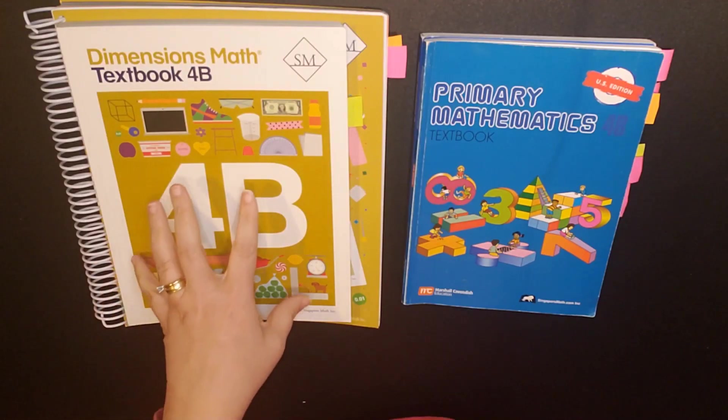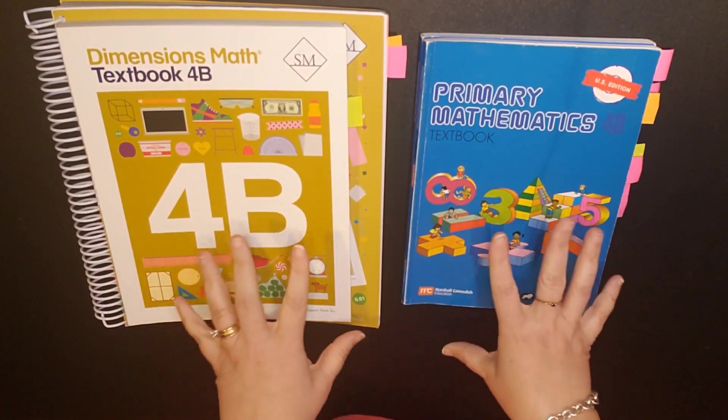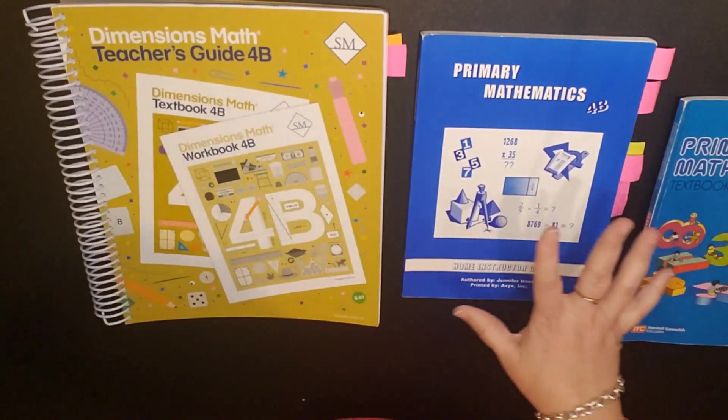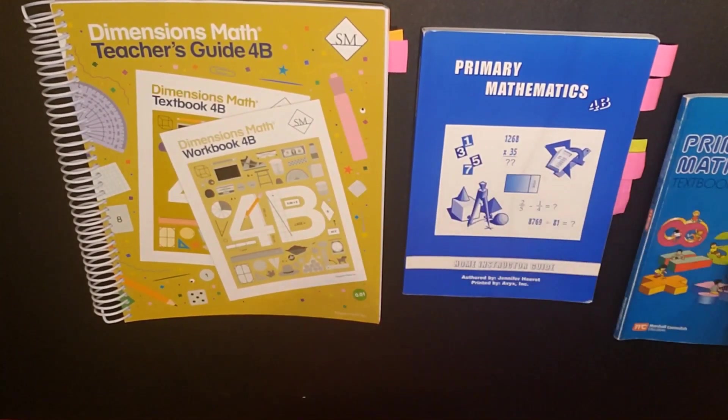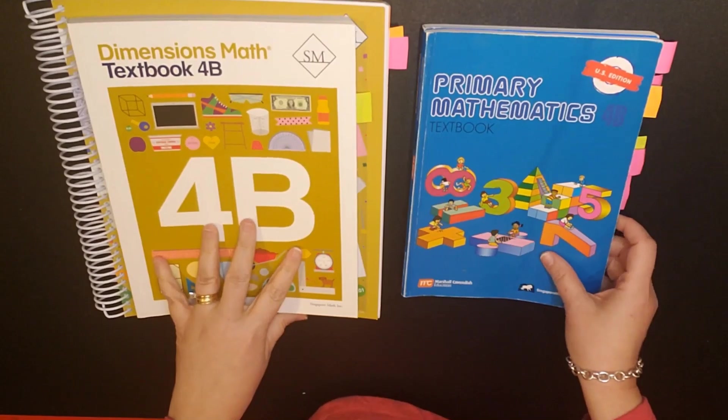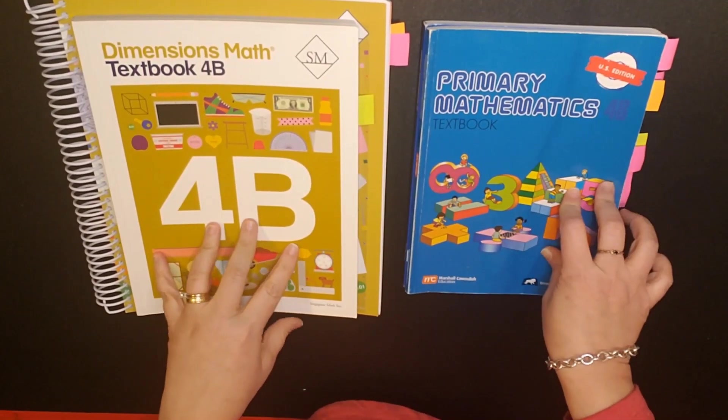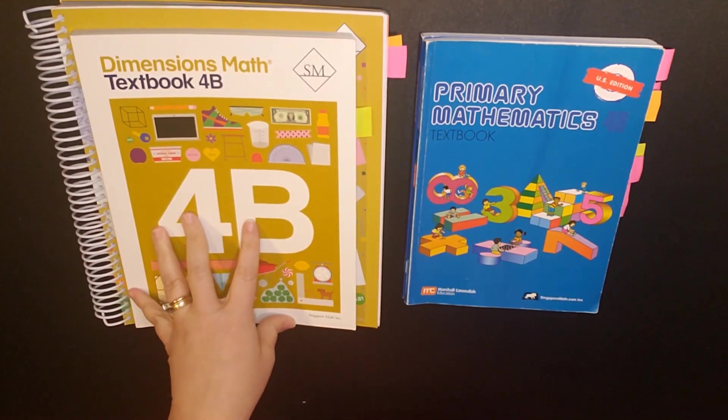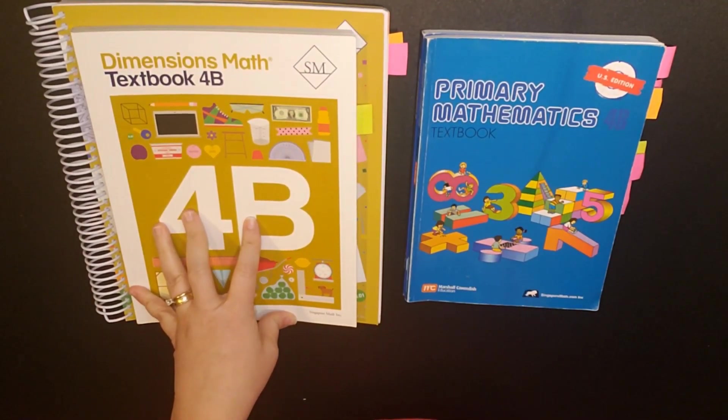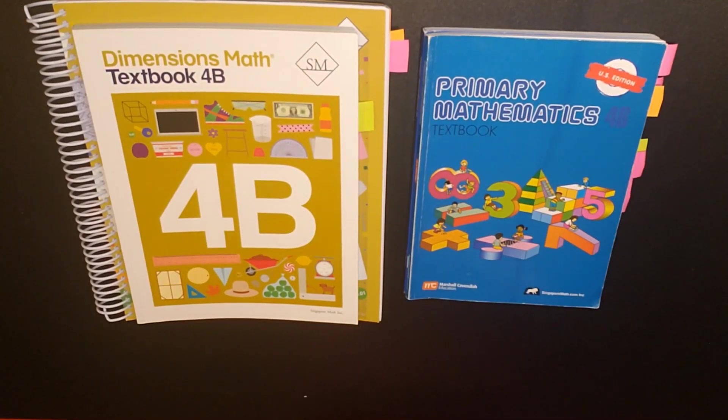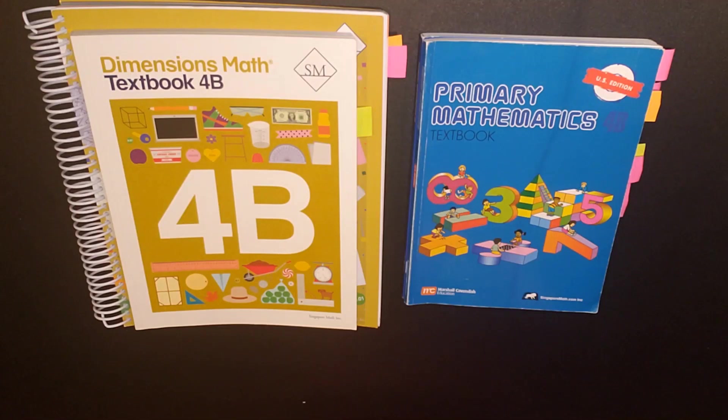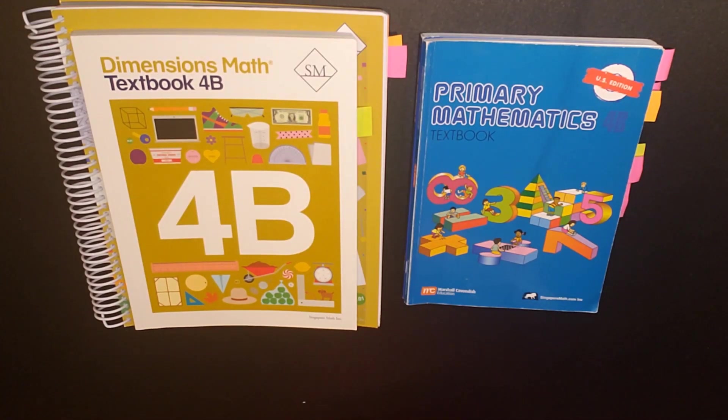I hope this video has been informative on dimensions versus primary within the individual textbooks as well as the teachers guide, the home instructors guide and then also the scope and sequence. Please make sure that you check out the Singapore math website. Also I have a detailed flip through of the dimensions program which I will link and I have a detailed flip through of the primary program. It is the primary common core but it does give details with information as to how it is set up and I will link that as well. As always if you have any questions please leave those in the comments. I will answer them to the best of my ability. I thank you for your time and I look forward to seeing you next time.